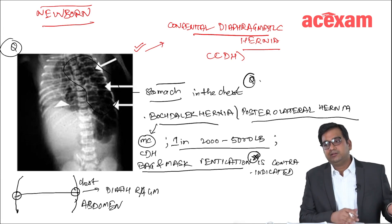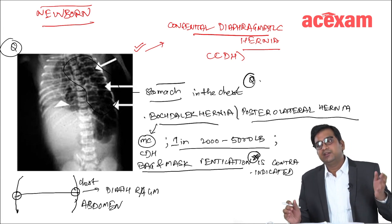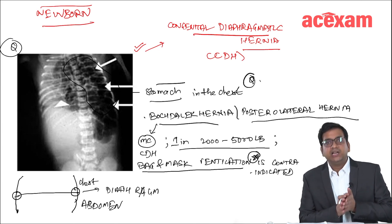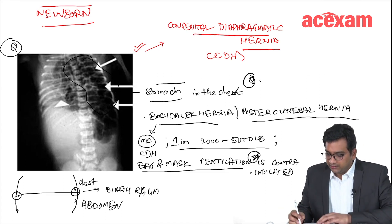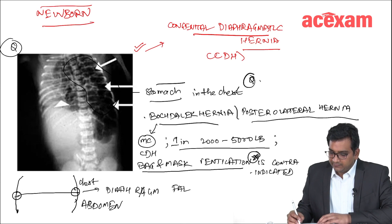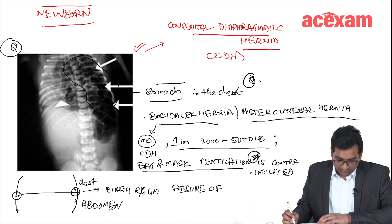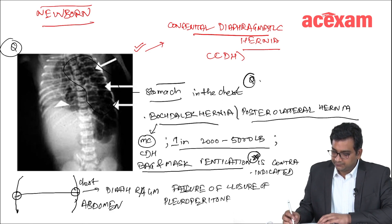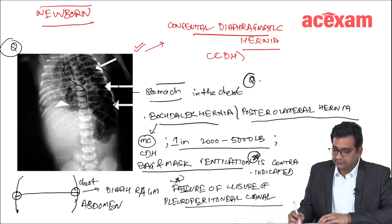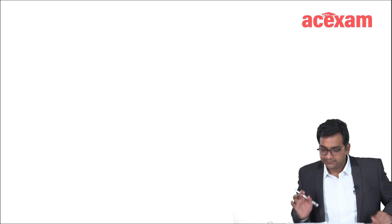During pregnancy, this failure of closure of the pleuroperitoneal canal leads to lung hypoplasia, which leads to respiratory distress in the newborn. So there is failure of closure of the pleuroperitoneal canal.